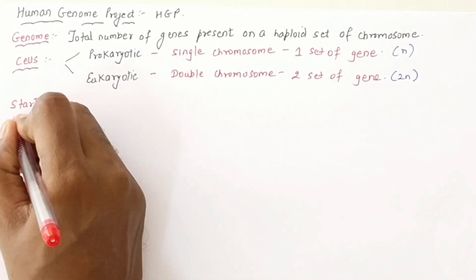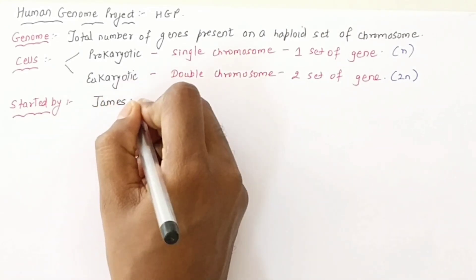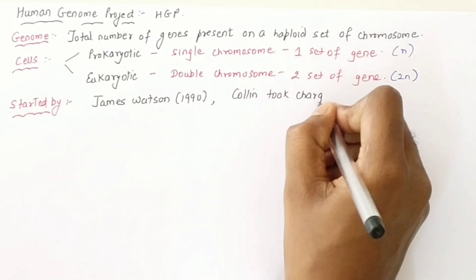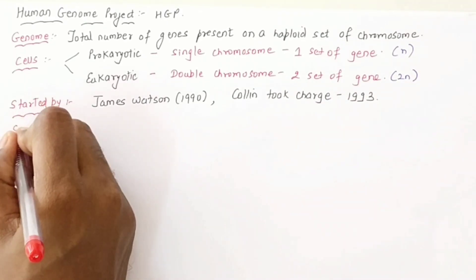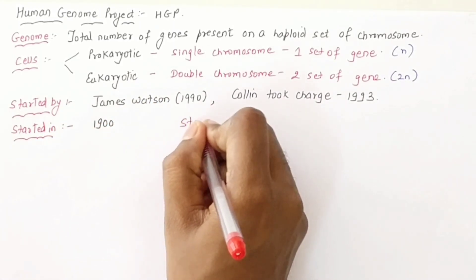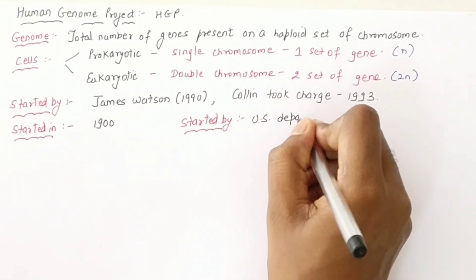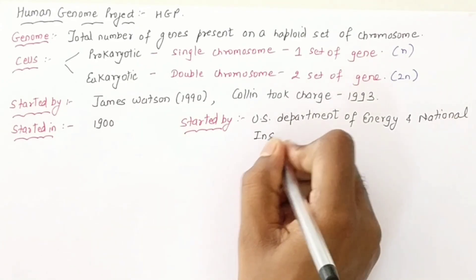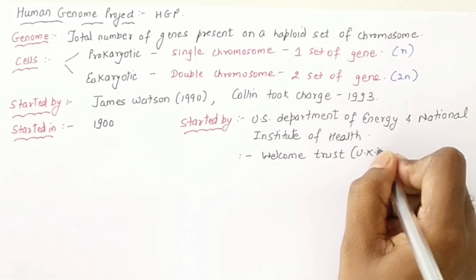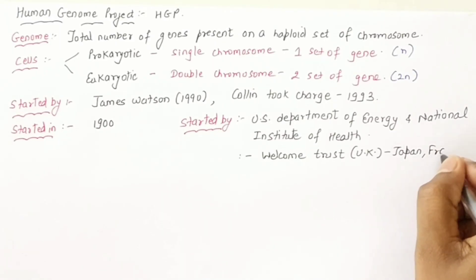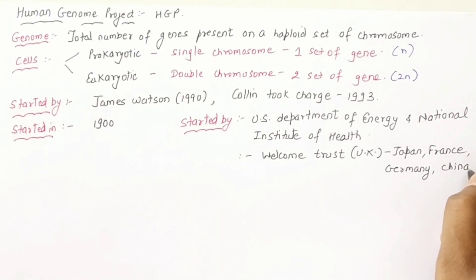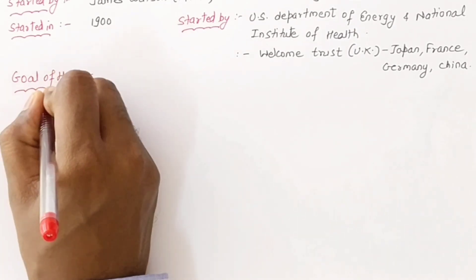One set is called n and two sets are called 2n. The Human Genome Project started with funding from organizations including the Wellcome Trust UK, and several countries participated — Japan, France, Germany, and many others contributed to the project.